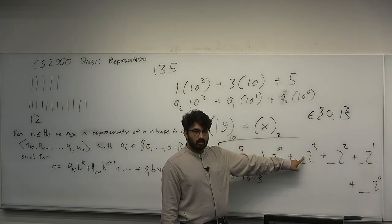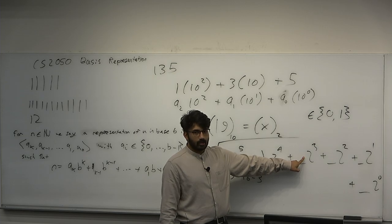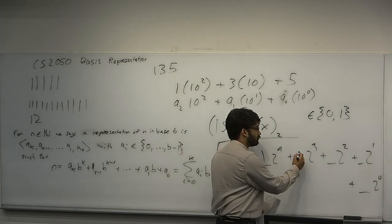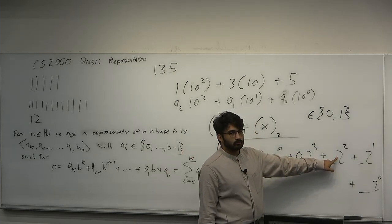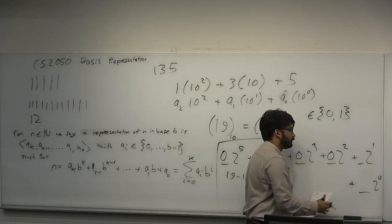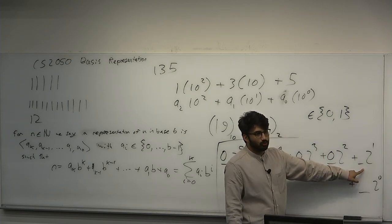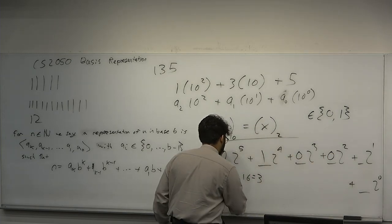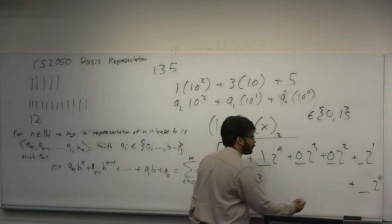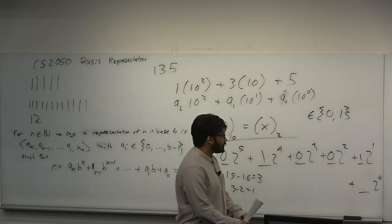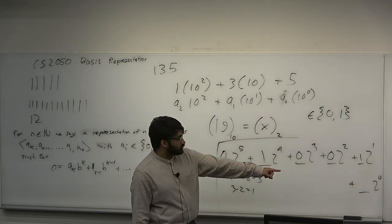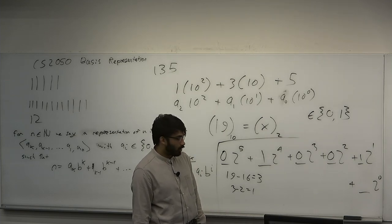Then we compute 19 minus 16 to get what? 3. So we put a 1 in this fourth, fifth place, I suppose. And we want to now represent the remaining spots of 3. Well, what is 2 to the 3? 8. 8 is too big. 2 squared? 4. 4 is too big. 2 to the 1? 2. Well, 2 is less than 3, so we'll do 3 minus 2. That's equal to 1, so we'll put a 1 here. And then, what is 2 to the 0? 1. And we have a 1. Okay, great.